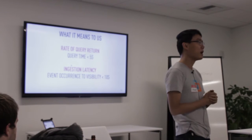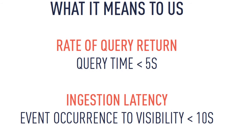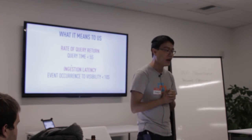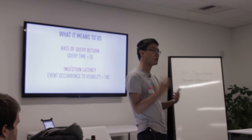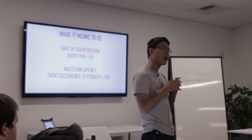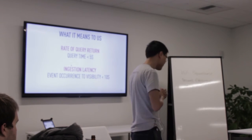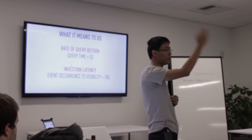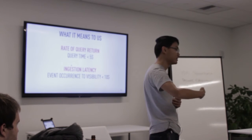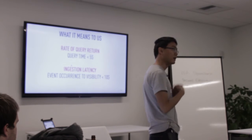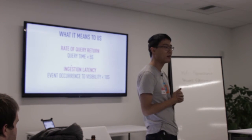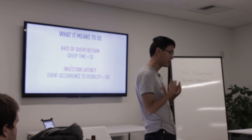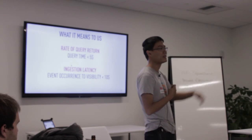For us in the Druid world, we consider real-time by two facets. One is around the rate of query return — when you ask the data store a question, how soon can you get an answer? We've designed the system such that an answer returns in somewhere between zero to five seconds, which is enough to provide an interactive experience. The other facet is ingestion latency — some event occurs, and how fast can the data store ingest it and make it explorable? Typically Druid can do this in about a second, often in hundreds of milliseconds. Customers are pretty happy if they can see an event that occurred less than ten seconds after it happened.